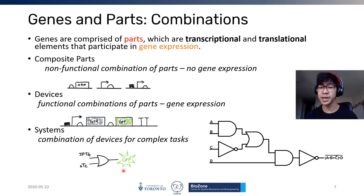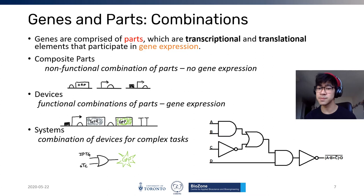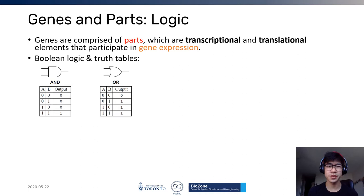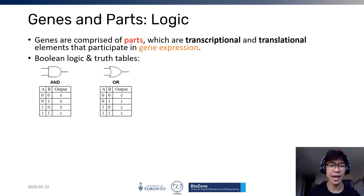Logic gates can be put together into much more complex systems to report on multiple inputs and through computation give some output, such as GFP. Logic gates in synthetic biology borrow terminology from computer science and mathematics — specifically Boolean logic and truth tables. The two basic logic gates are the AND gate and the OR gate, each depicted by specific symbols, each with a truth table.